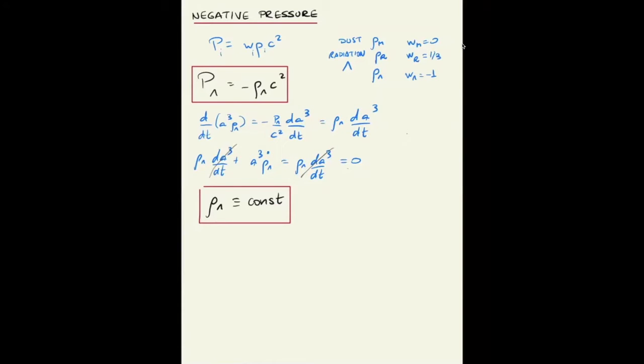Now going back to the acceleration equation and considering the density and the pressure of dark energy, substituting now the equation of state, then you have that the right hand side flips positive.